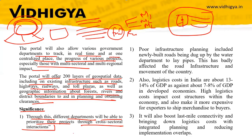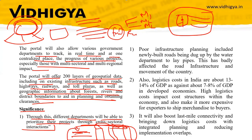Through cross-sectoral integration, different departments will be able to prioritize their projects. For example, if a highway has to pass through an area where there is a forest, a river, and an industrial area, the various ministries involved can coordinate on one platform to determine how the project should proceed — with minimum destruction and minimum loss to the industry, river, and forest. When clearance is obtained from all ministries, project implementation will also be fast.